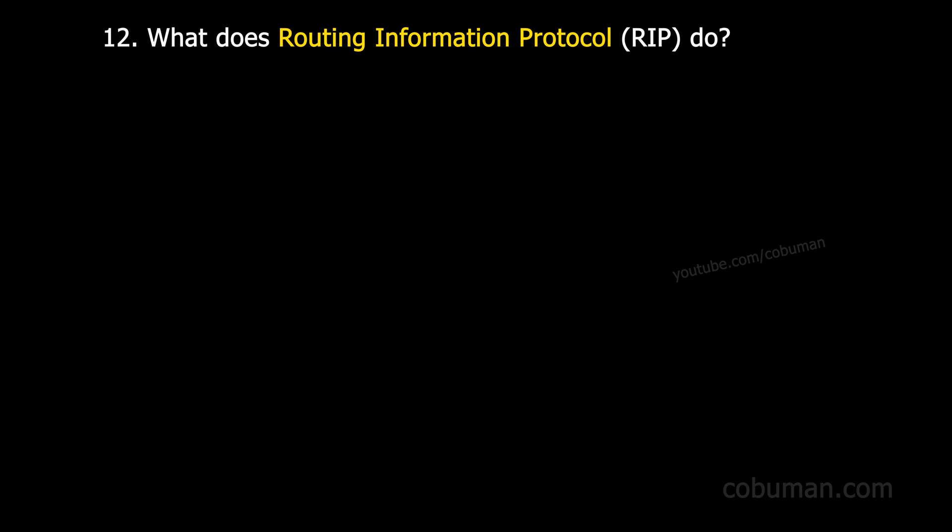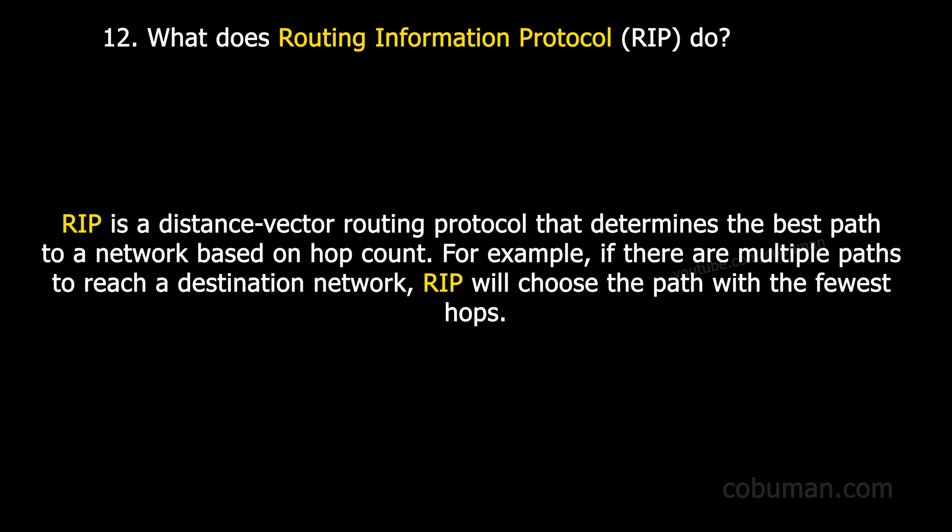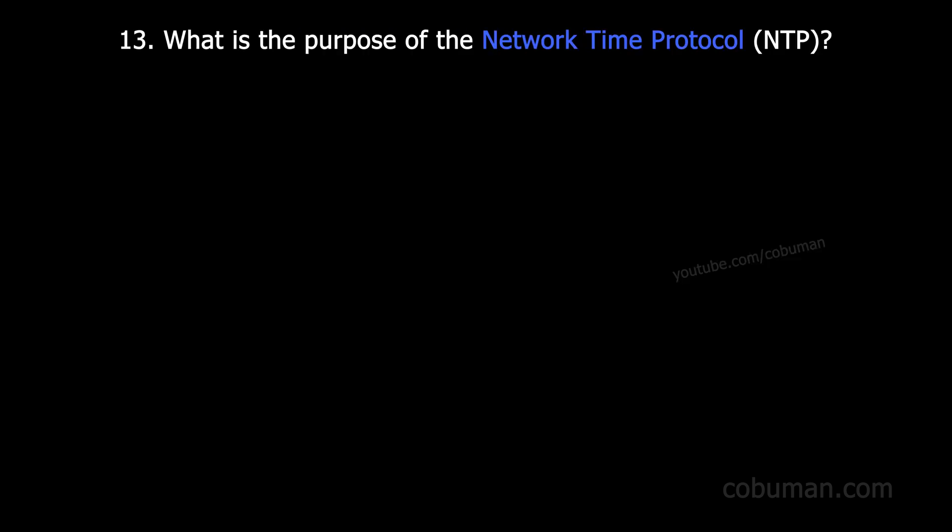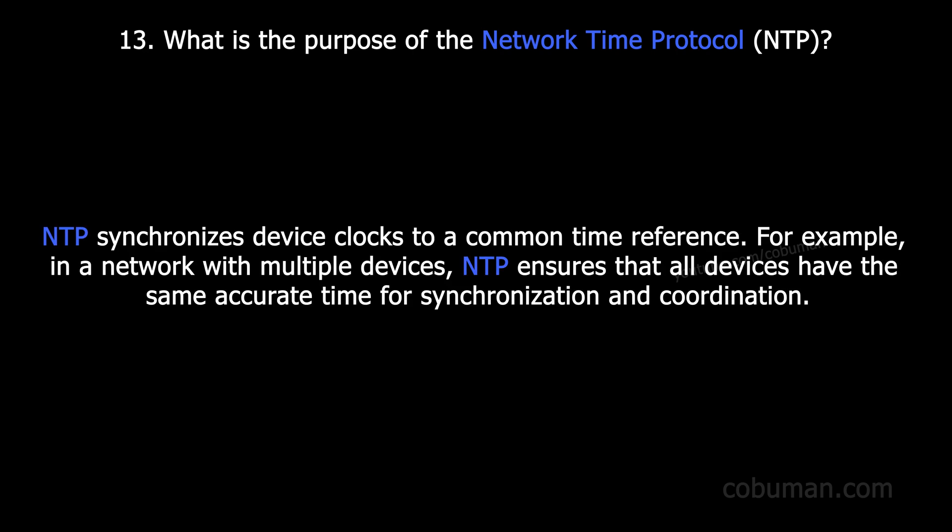Question number twelve: what does Routing Information Protocol do? RIP is a distance vector routing protocol that determines the best path to a network based on hop count. For example, if there are multiple paths to reach a destination network, RIP will choose the path with the fewest hops.